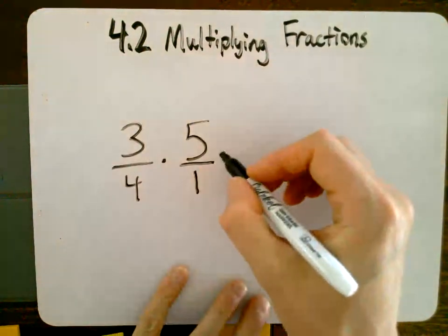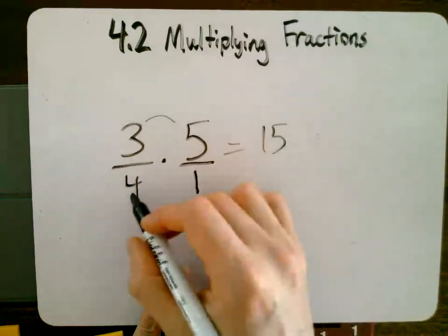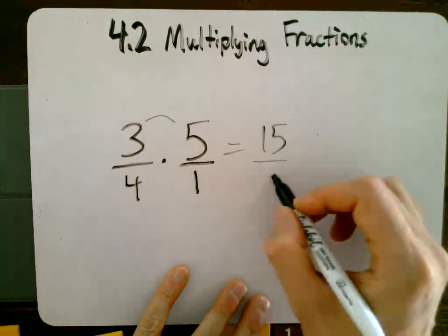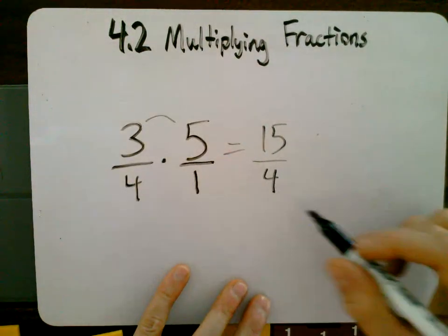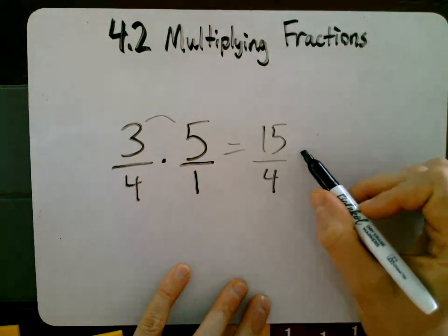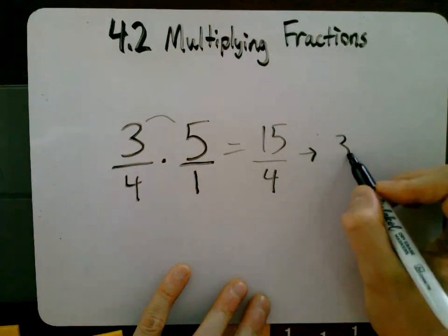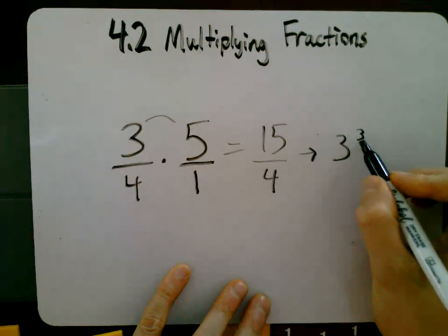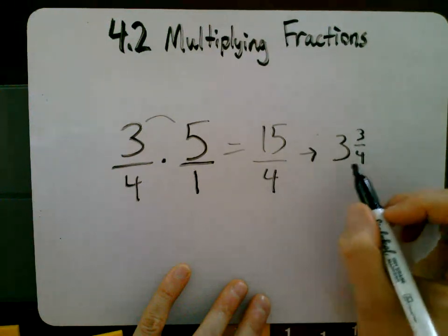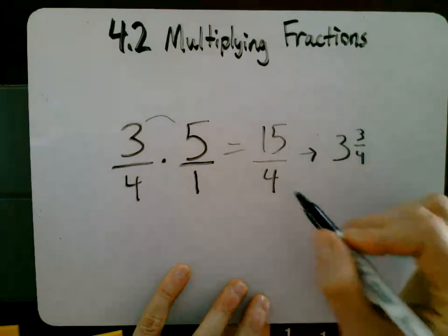So you can still do the same thing. You multiply numerators. 3 times 5 is 15. You multiply denominators. 4 times 1 is 4. So 15 fourths would be our answer. Or we could change this back to a mixed number. If we did that, we would get 3 and 3 fourths because that 4 times 3 is 12 plus 3 more gives us the 15.